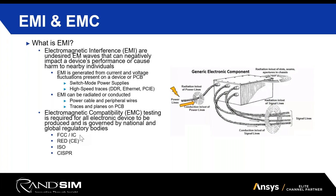Emissions testing checks whether your device is causing problems to the outside environment — for example, if a lot of noise is coming off a cable and causing something nearby to behave erratically. Susceptibility testing checks whether external fields cause your device to operate unexpectedly. Both are critical for device success. Common sources of EMI include switch-mode power supplies and any fast-changing current or voltage, on your board or on your cables.